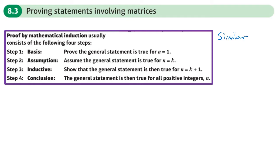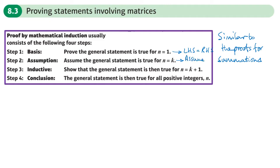You'll remember that for summations we started with the basis step, proving the statement true for n equals 1, checking that the left hand side equals the right hand side. Then we wrote a statement assuming it's true for n equals k. Then we need to prove it's true for n equals k plus 1, and then write our conclusion.